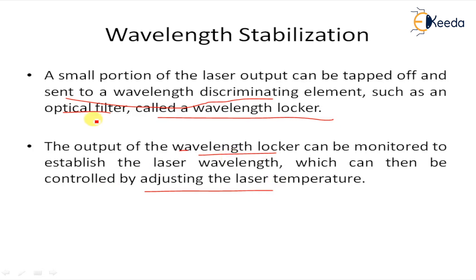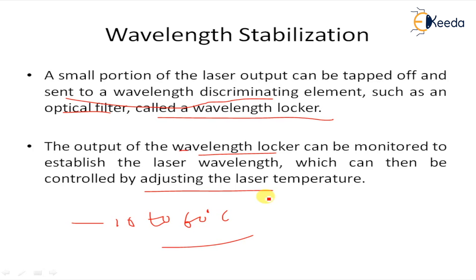Depending on the temperature range needed — typically minus 10 to 60 degrees Celsius for equipment in the central office — it may be necessary to temperature control the multiplexer and demultiplexer as well. If the multiplexer and demultiplexer are exactly aligned at 25 degrees Celsius, the ambient temperature at the two ends of the link could differ by 70 degrees Celsius, based on the given numbers.